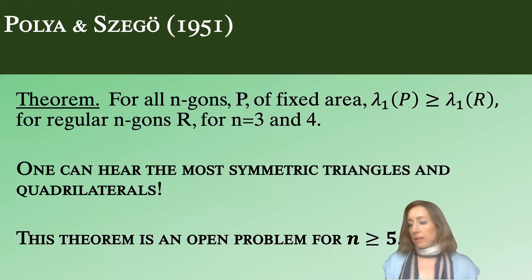Polya and Szego in the 1950s proved a similar result for polygonal domains, but this only holds for triangles and quadrilaterals.